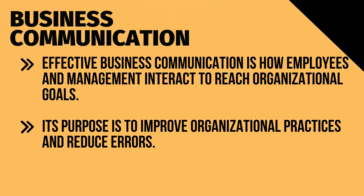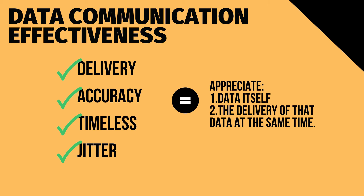Now that we have discussed how to interpret the data, it is important to know how to effectively communicate the gathered information. Let's start with understanding what business communication is. Effective business communication is how employees and management interact to reach organizational goals. Its purpose is to improve organizational practices and reduce errors. The effectiveness of a data communication system depends on four fundamental characteristics: delivery, accuracy, timeliness, and jitter.